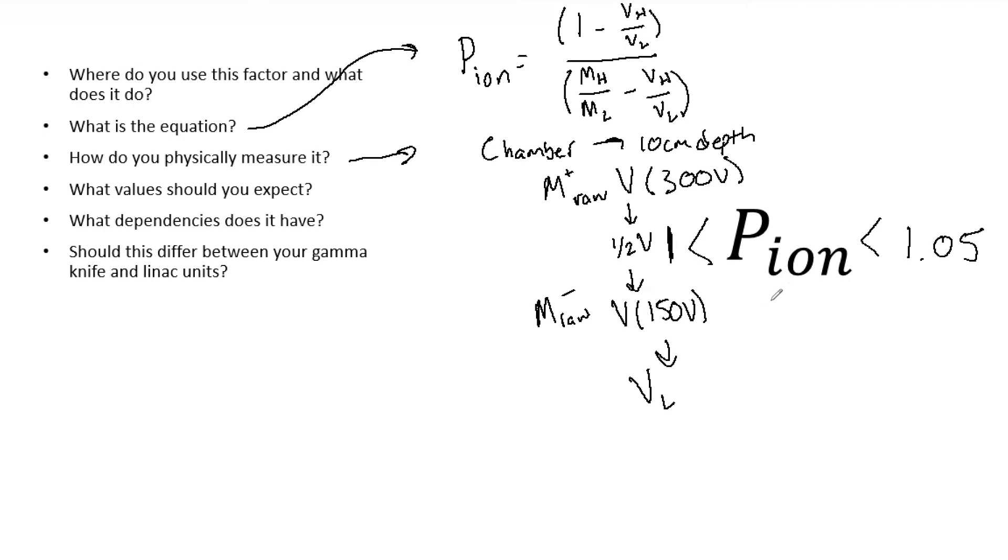Another thing though, your P ion also has to be greater than 1. Because think about it, you are essentially correcting for ions that are recombining, and you can't recombine and get more charge. It doesn't make any sense. So the value has to be greater than 1 but it must be less than 1.05.